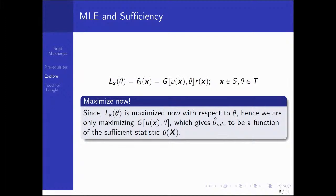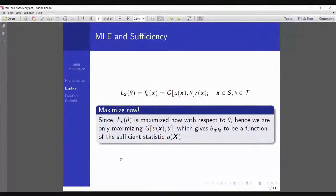After maximizing g(U(x), theta) with respect to theta, what we get is a function of U(x) — the sufficient statistic. That's the beauty of it. So we prove that the MLE is a function of the sufficient statistic. But the question is: is this always true?